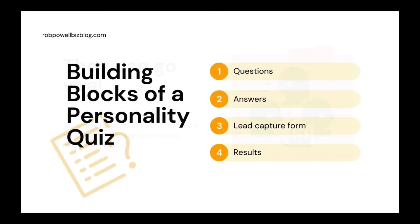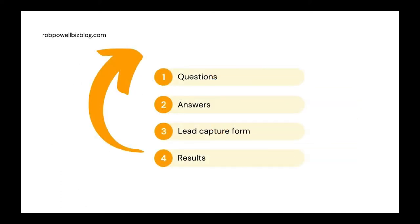So let's look at the building blocks of an effective personality quiz. A lead generation quiz consists of four main elements: the questions, the answers, a lead capture form, and the results. Once the respondent has finished answering the questions, a lead capture form appears asking them for an email address where you can send the results. As soon as they enter their email address, the answer to the quiz is revealed. The key to making a personality quiz is to start from the end and work backwards, because the questions you ask will be determined by the quiz results or outcomes.